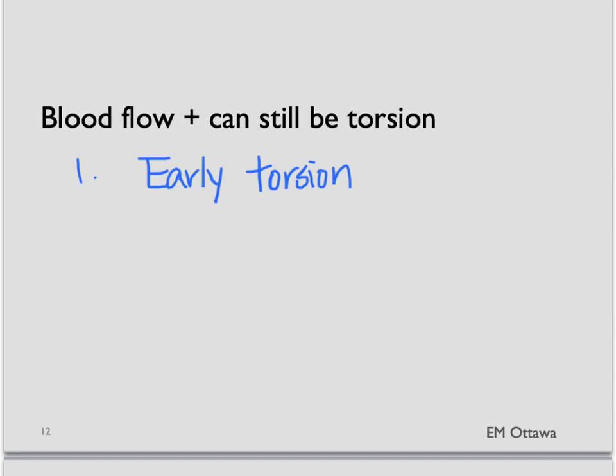However, the presence of blood flow can still mean ovarian torsion for two reasons. In early torsion, only the venous outflow is obstructed. The arterial supply is not affected yet, and therefore it can still be seen on the ultrasound and Doppler flow.